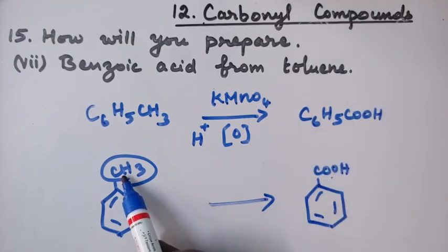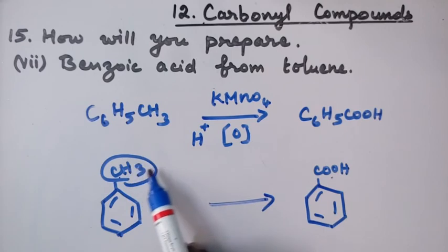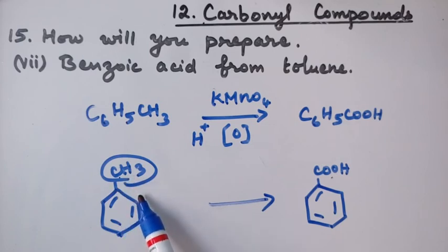The alpha carbon must have alpha hydrogen. If this carbon is tertiary, to CH3 group, C groups are attached, if it is a tertiary group then there won't be any reaction. The requirement is this carbon alpha carbon must have at least one alpha hydrogen.